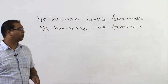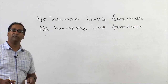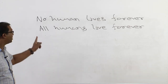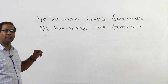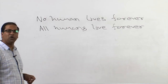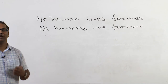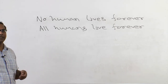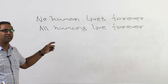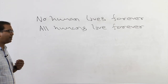To explain falsification further, consider these statements: 'No human lives forever' versus 'All humans live forever.' Which can you falsify? You cannot falsify the first statement, but you can always falsify the second — 'all humans live forever' — by producing a dead human body, by bringing a dead human being to the laboratory. You can always falsify this statement.